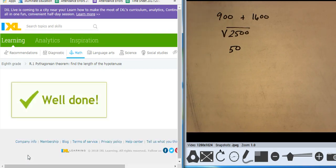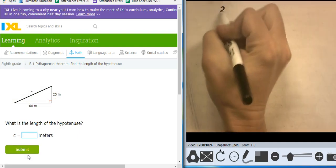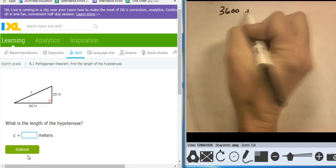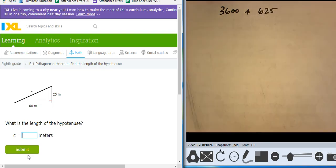Also using my calculator. Let's see. 60 squared is 3600. 25 squared is 625. Adding them together.